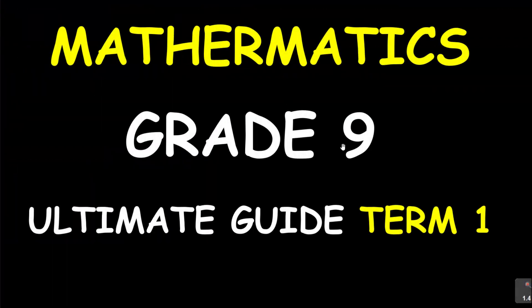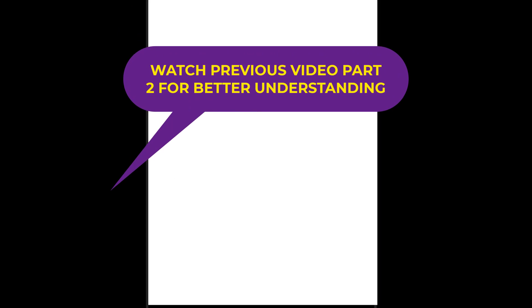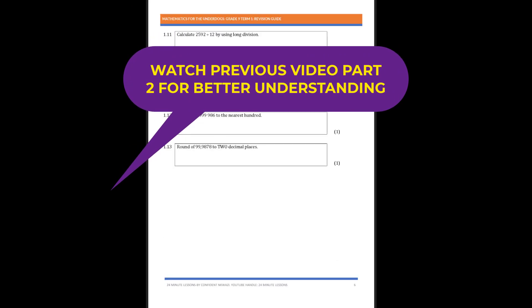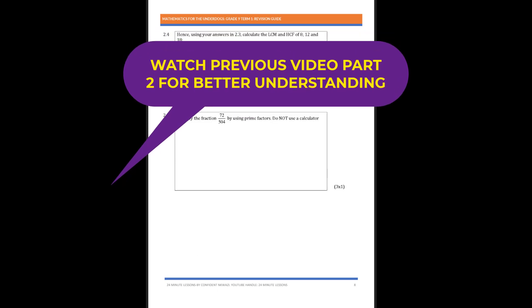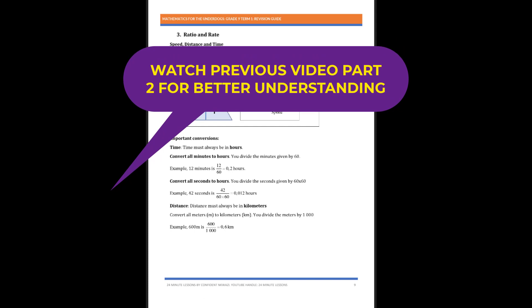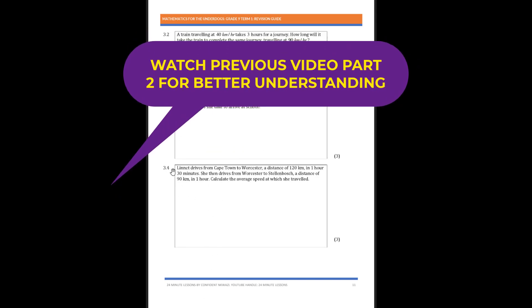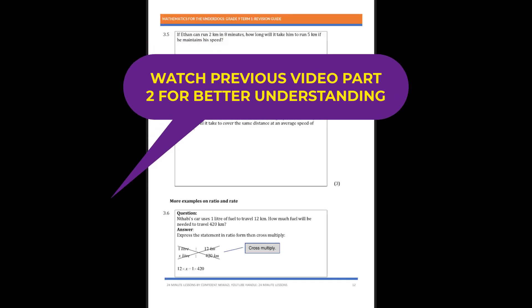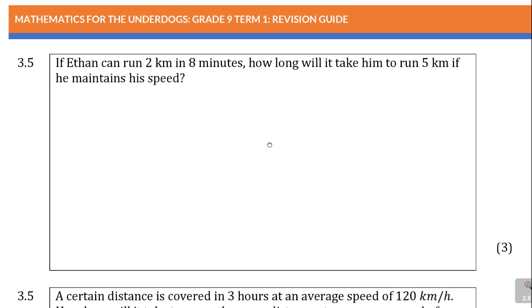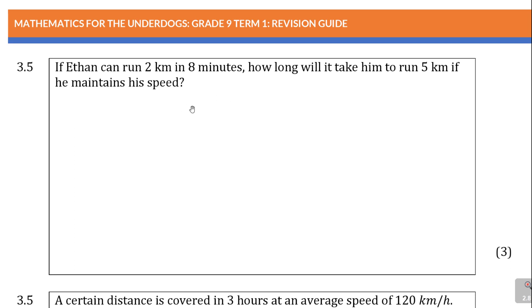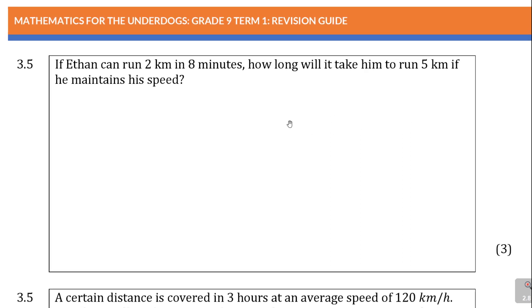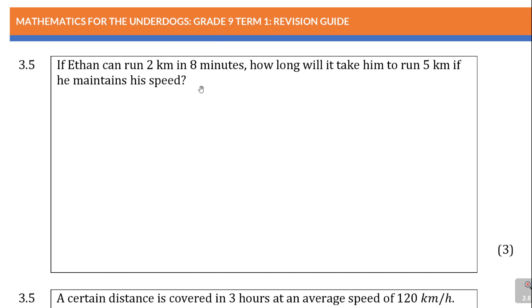Welcome to the ultimate guide for Term 1, Week 4, Mathematics Grade 9. We have already looked at quite a number of lessons here — whole numbers, prime numbers — and currently we are looking at ratio and rate. We've done a few questions up to 3.4. This is a continuation to question 3.5. If you are coming in contact with these videos for the first time, you have missed quite a lot. I encourage you to subscribe and turn on the notification bell. This is a good revision for your Term 1 work. Now let's look at question 3.5, where we are continuing to look at speed.